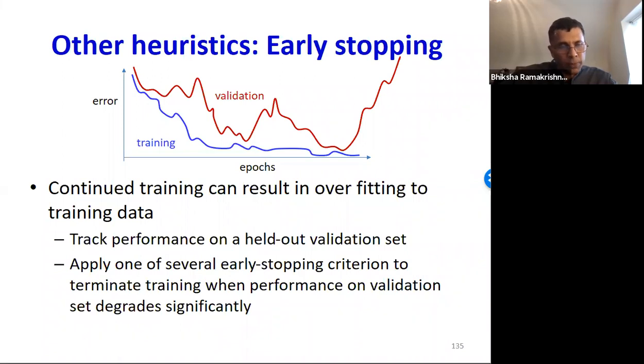There have been other heuristics that we also use for training. Now, one common heuristic is early stopping. We will track the performance, the classification performance on the training data, but also on a held out set of validation data that was not used during training. And we will stop training when the performance on this validation data begins to get worse. So, this can prevent overfitting to the training data. So, here in this example, the performance of the training data might follow the blue curve. On the validation data, it might be this red curve. You'd stop the training right at this point because beyond this point, the performance on the validation data is getting rapidly worse. That's one heuristic.